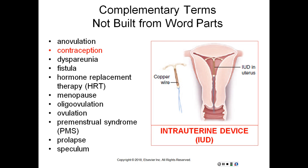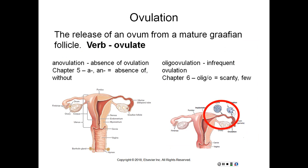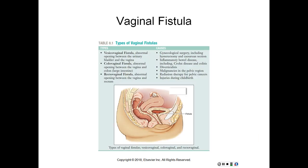Here are the same complementary terms with images. An IUD, which is an intrauterine device, is a type of contraception – something a woman would get implanted so she is not able to get pregnant. Here is ovulation again – the release of an ovum from a mature graafian follicle; the verb would be to ovulate. Here are the different types of vaginal fistulas and the causes of each of them, which is also in your textbook. That will end this recording.